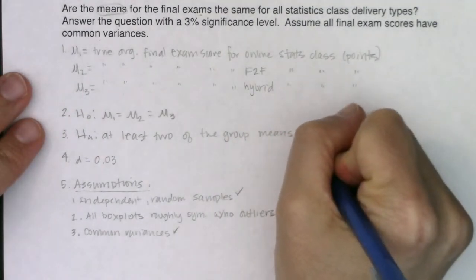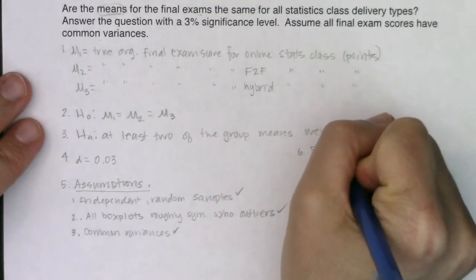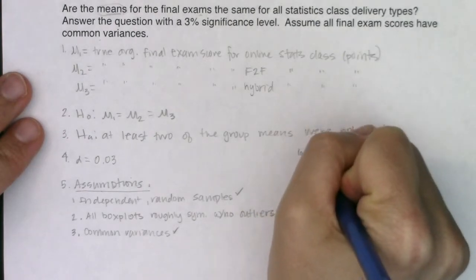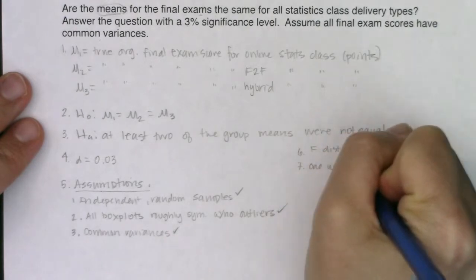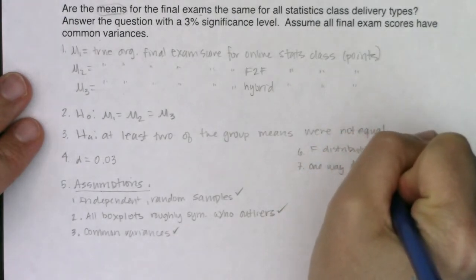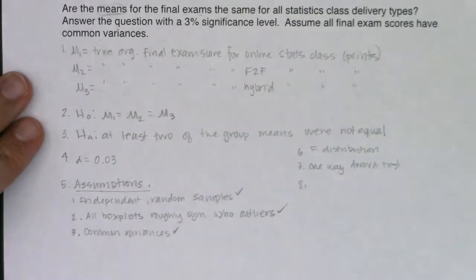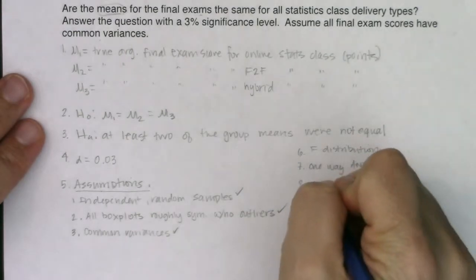So step six, we are on the F distribution. Step seven, I'm going to do One Way ANOVA.